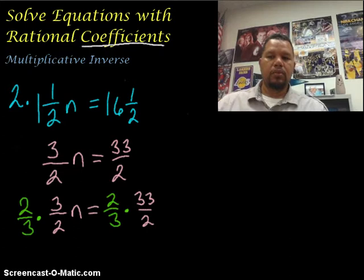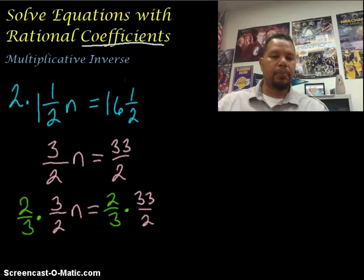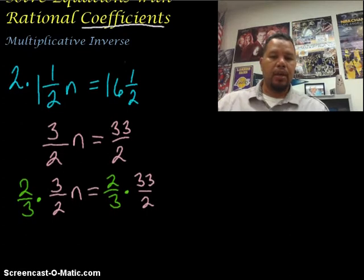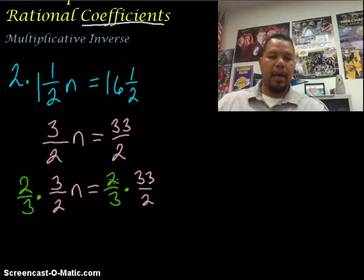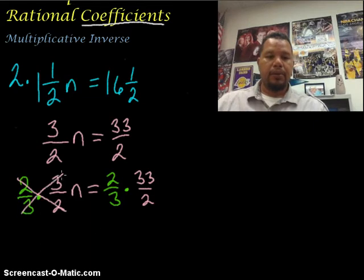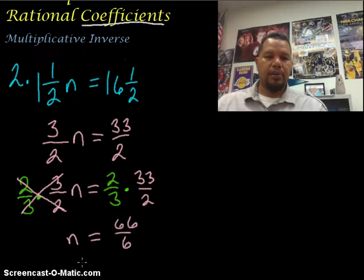We're going to multiply both sides. So now that I've applied the multiplication property of equality here, I'm going to actually multiply. So again, the multiplicative inverse, when I multiply it times its number, they cancel out. So I get my n by itself right here. And again, I multiply straight across, giving me 66 over 6, and that simplifies to 11. So n is equal to 11.